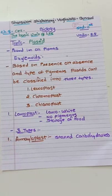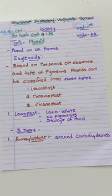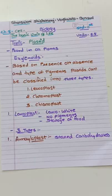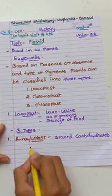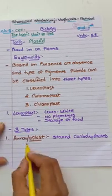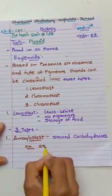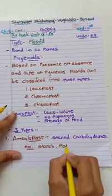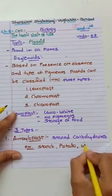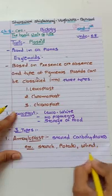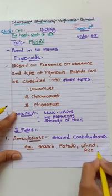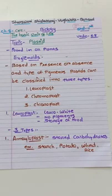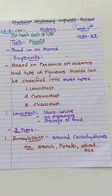Amyloplast stores carbohydrates, meaning starch. We can easily observe this in potato, rice, wheat, etc. These are examples of amyloplast storage — starch in potato, wheat, and rice. We observe amyloplast in these foods.